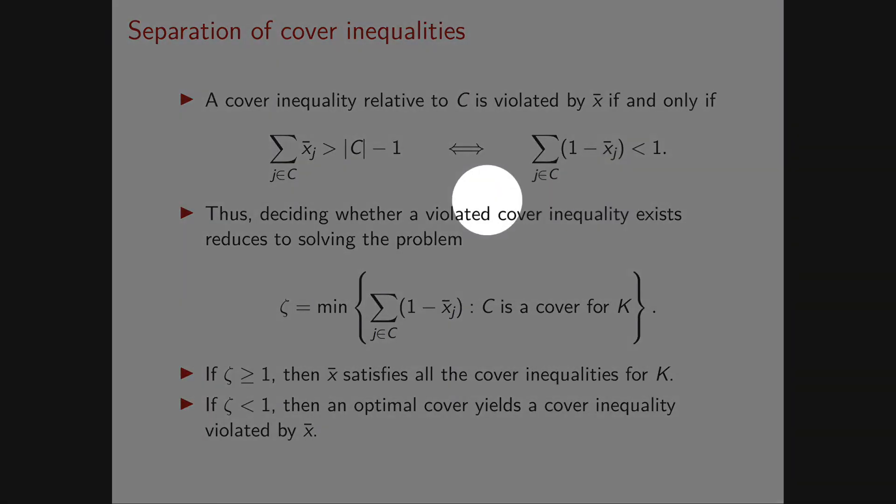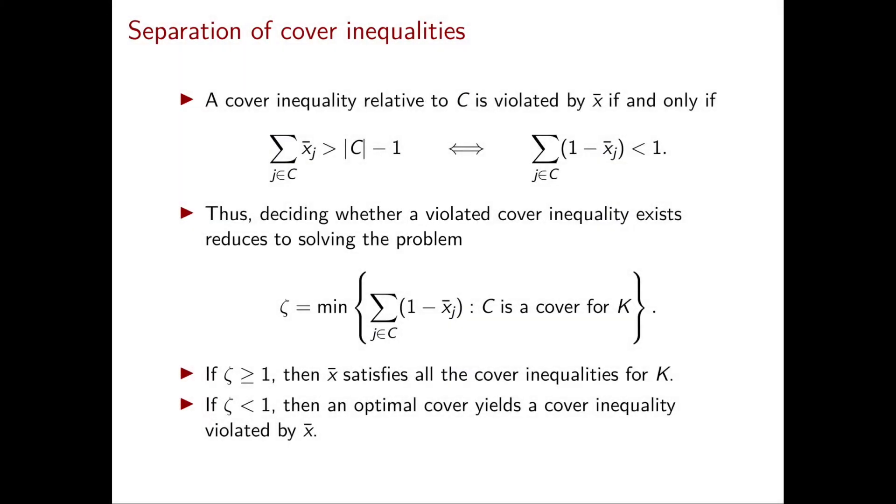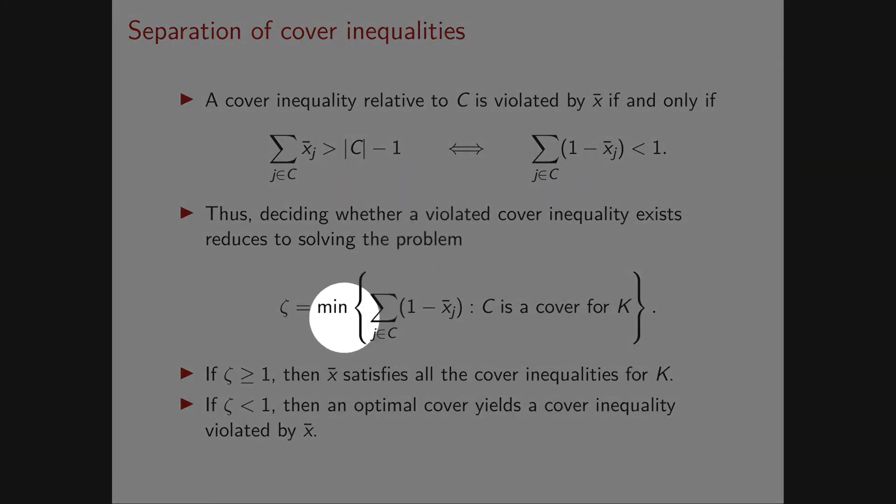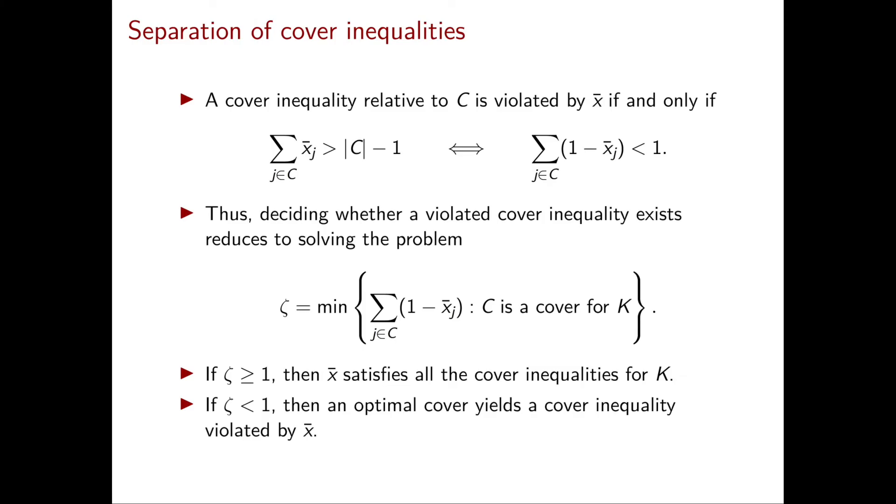At this point, deciding whether a violated cover inequality exists can easily be written as the following optimization problem. We minimize this expression, the sum for j in C of (1 - x̄ⱼ) over any cover C for K.